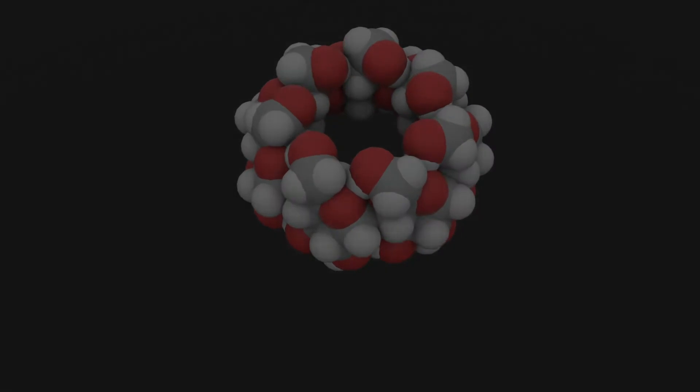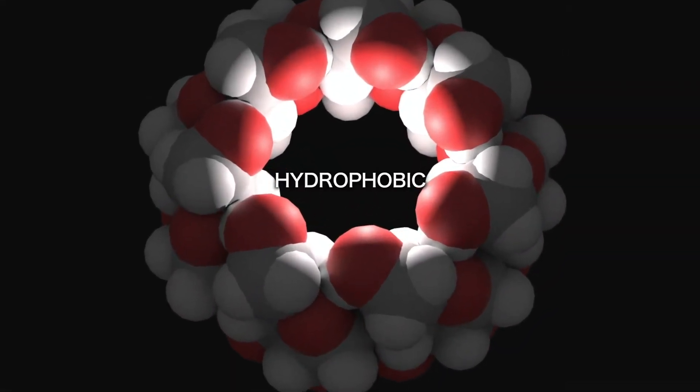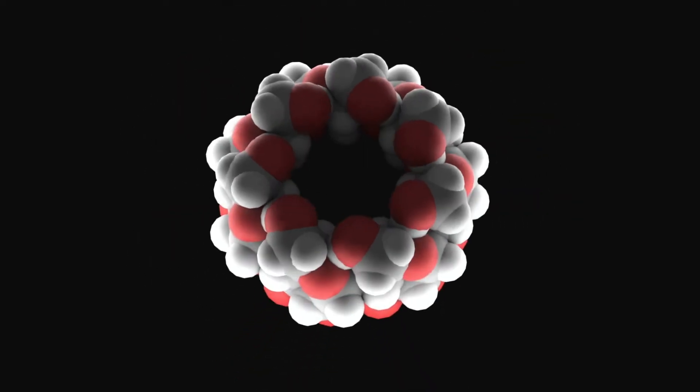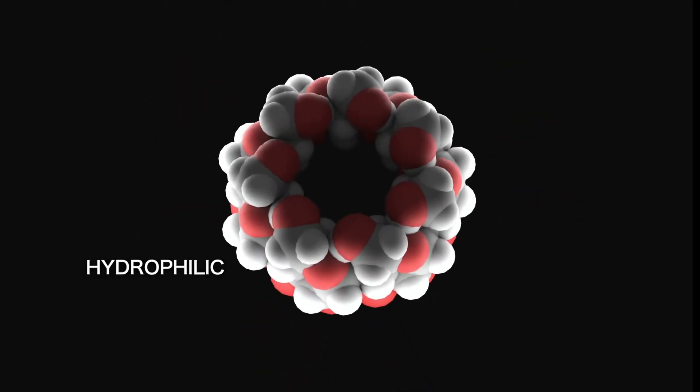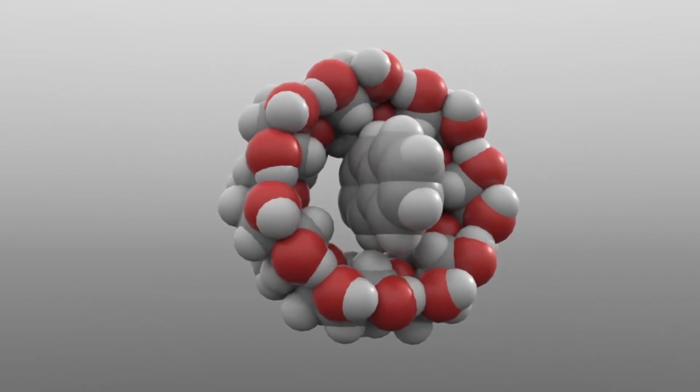Cyclodextrin has a natural ability to trap other molecules because on the inside it's hydrophobic, or water repellent, and on the outside it's hydrophilic, meaning it's attracted to water.